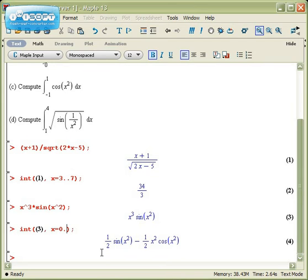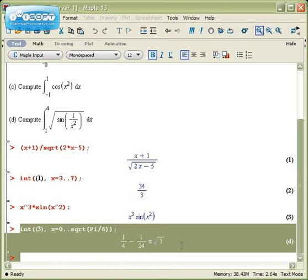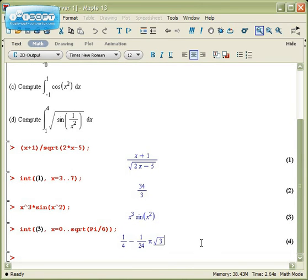x goes from 0 dot dot the square root of capital pi over 6. And now when I rerun the command, oops, got a little bit crazy there. When I rerun the command, I get an exact value of 1 4th minus 1 24th pi times the square root of 3.